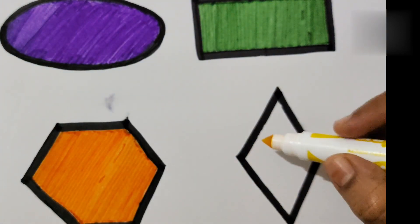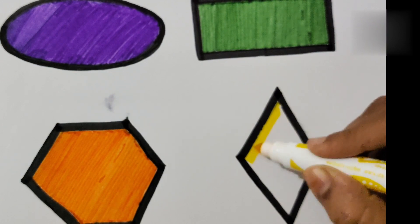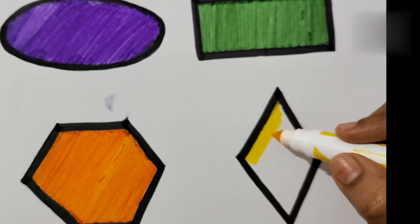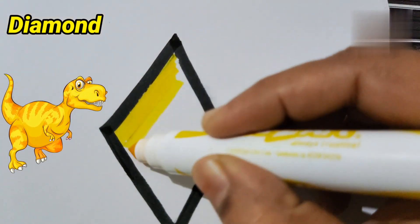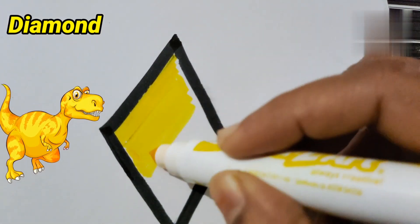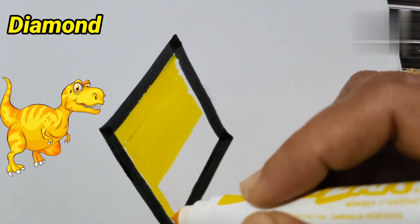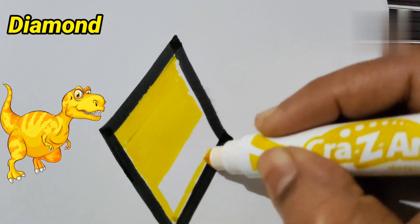Now let's fill diamond with yellow color. Yes, let's fill the yellow color in the diamond shape and we have yellow dinosaur with us looking at the diamond shape. My diamond shape is ready in yellow color.